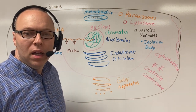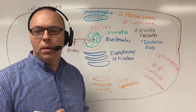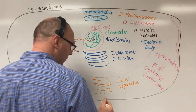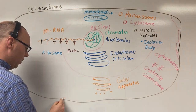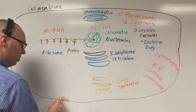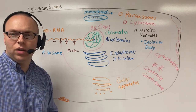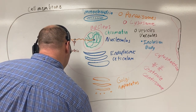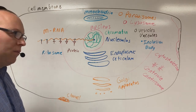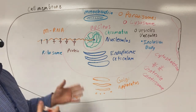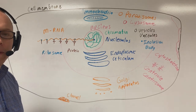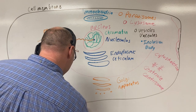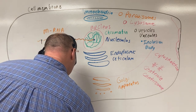Next we have our channels — little channels in the cell membrane. These help with entry and exit. For example, you might have a sodium channel that lets sodium flow in. We also have surface proteins that are receptors. A molecule will bind there and signal the cell — hey, you need to do this or that.